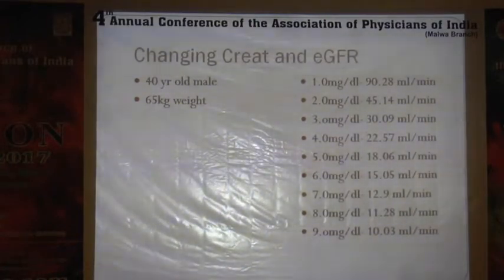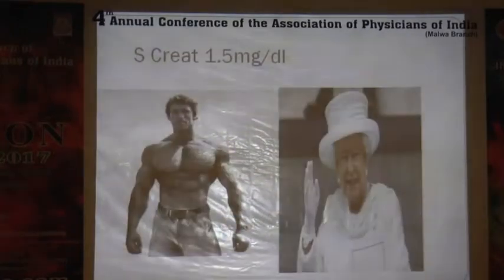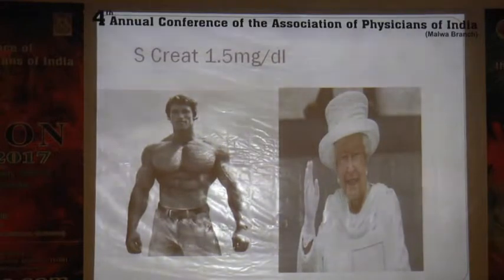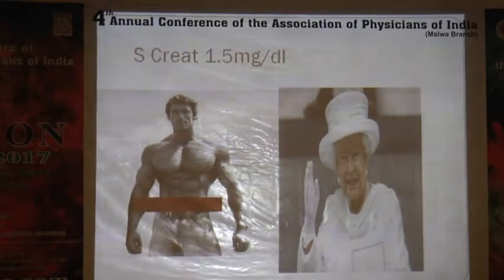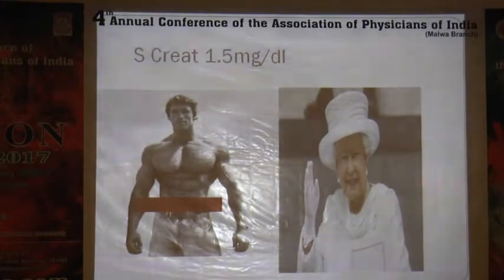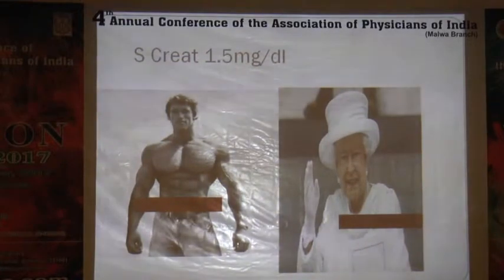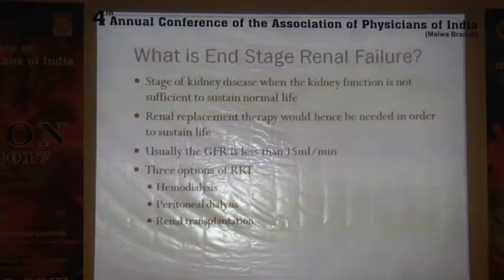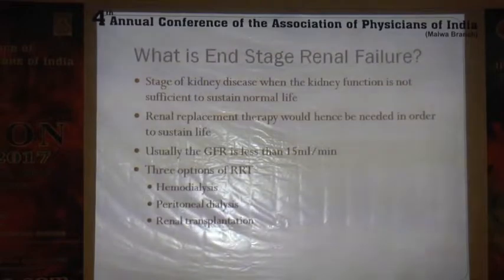Consider a patient with creatinine of 1.5 — these are two very different persons with the same creatinine. A 100 kg, six-foot, 30-year-old male will have a GFR of 105 with creatinine 1.5, whereas an elderly lady close to 100 years of age with creatinine 1.5 will have a GFR of just 15. This emphasizes that we need creatinine done along with calculated GFR in every patient.